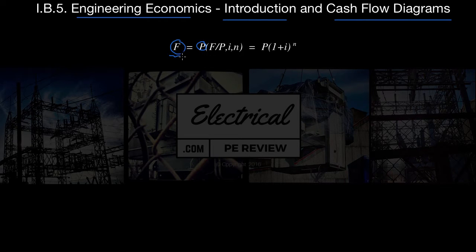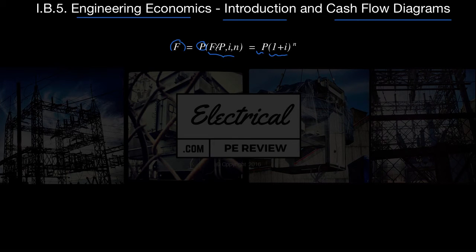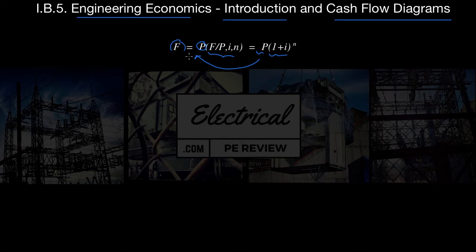Whether it's geometric, annual, uniform, or what have you, it's all the same format. Basically, this one plus I to the N is what gives you your ratio. You multiply what you get with your present worth value. No matter what the problem is, the first step is to figure out the right equation to use. Then you look at the actual formula, figure out the ratio using your interest value and compounding period, and multiply that by whatever you're going from — in this case P — to get what you're going to, in this case F.